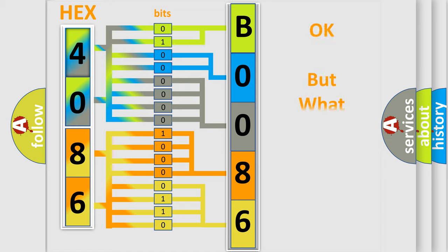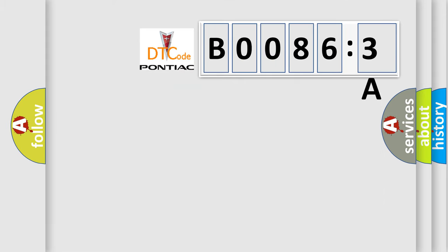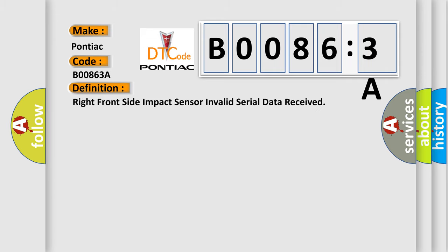We now know in what way the diagnostic tool translates the received information into a more comprehensible format. The number itself does not make sense to us if we cannot assign information about what it actually expresses. So, what does the diagnostic trouble code B00863A interpret specifically for Pontiac car manufacturers? The basic definition is: right front side impact sensor invalid serial data received.